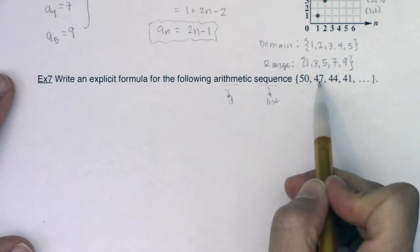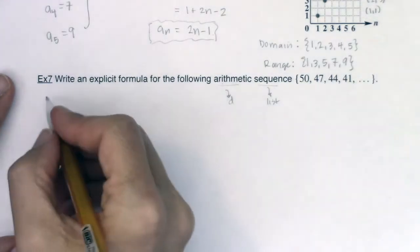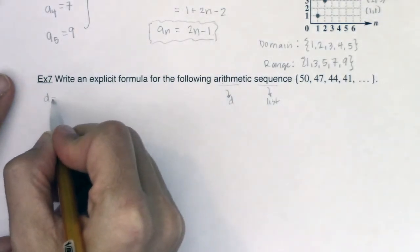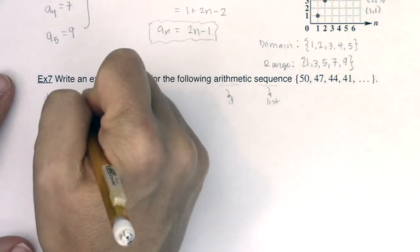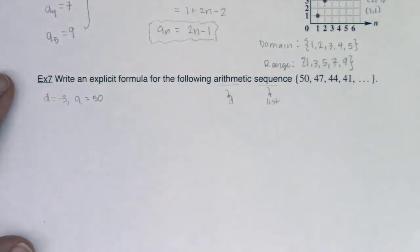To get from 50 to 47, I subtract 3. To get from 47 to 44, I subtract 3. So there's a couple things I want to just take note of right away. I can see that D is equal to negative 3. And again, it's always good to identify your first term.